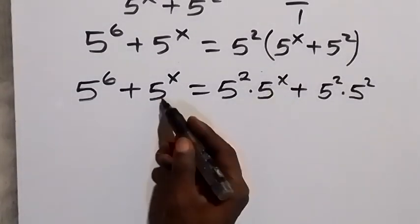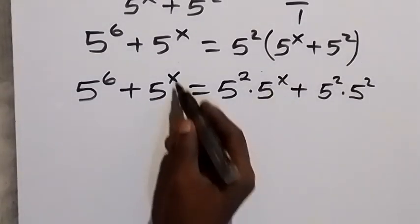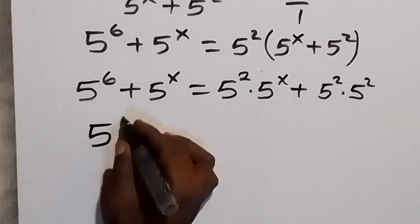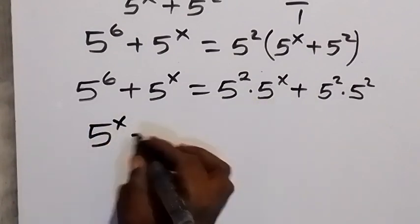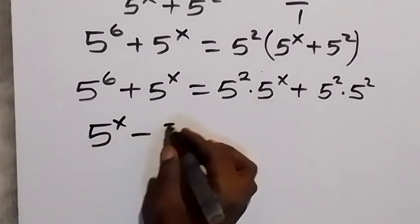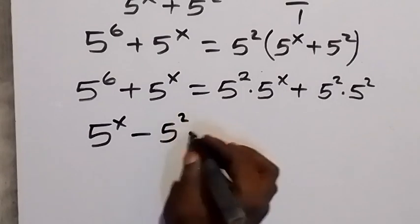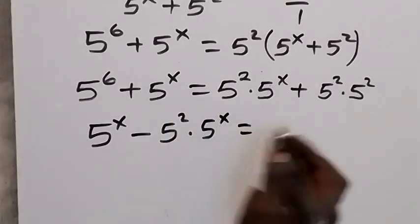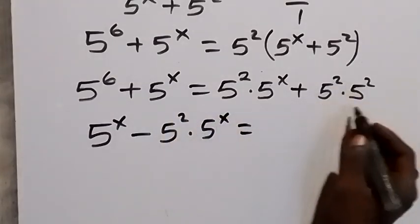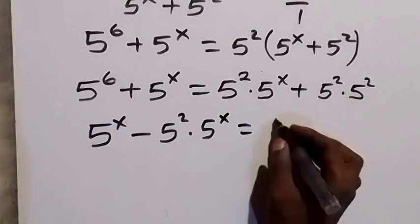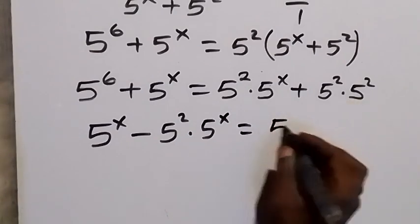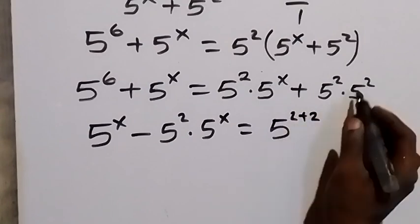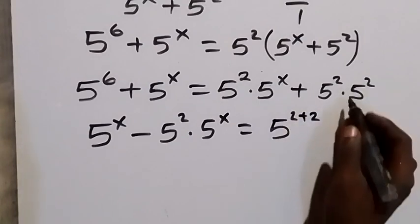From here, let's take the terms that contain 5 raised to power x to one side. So we have 5 raised to power x here, and this comes over to become minus 5 squared times 5 raised to power x, equals what is left on the other side.